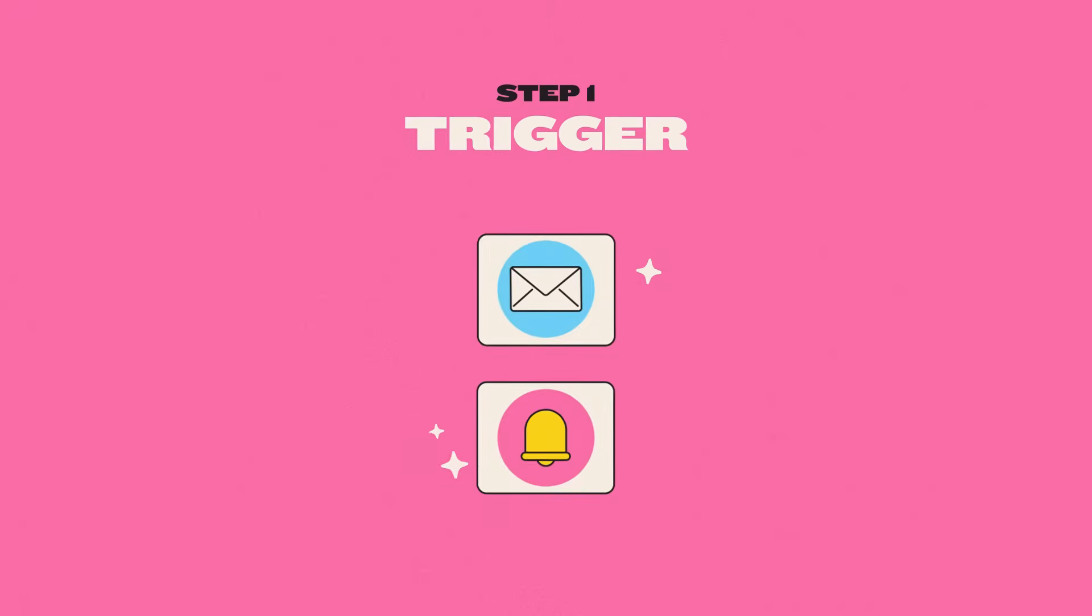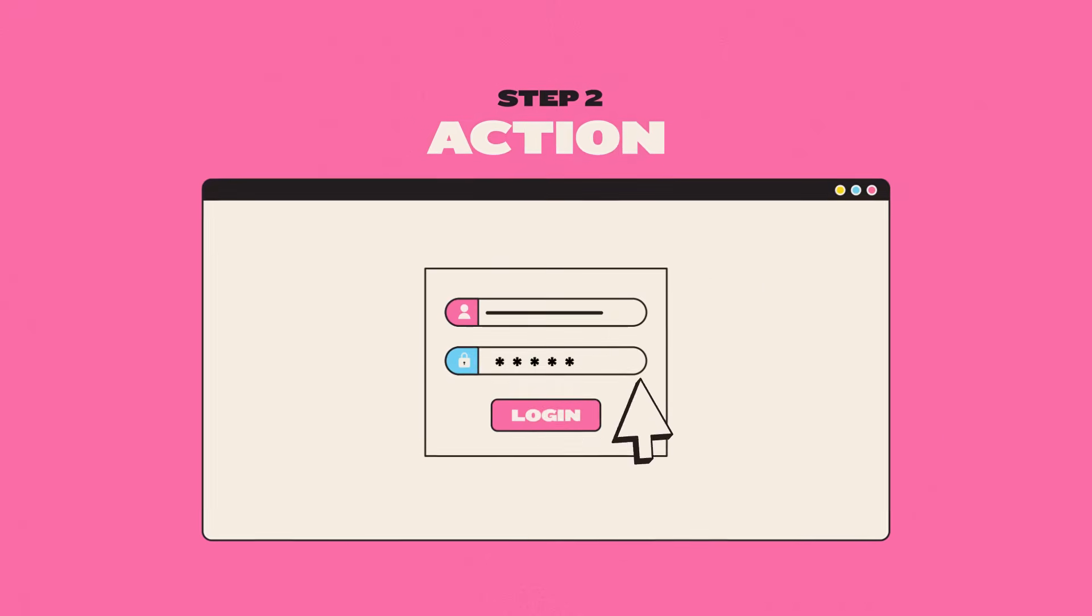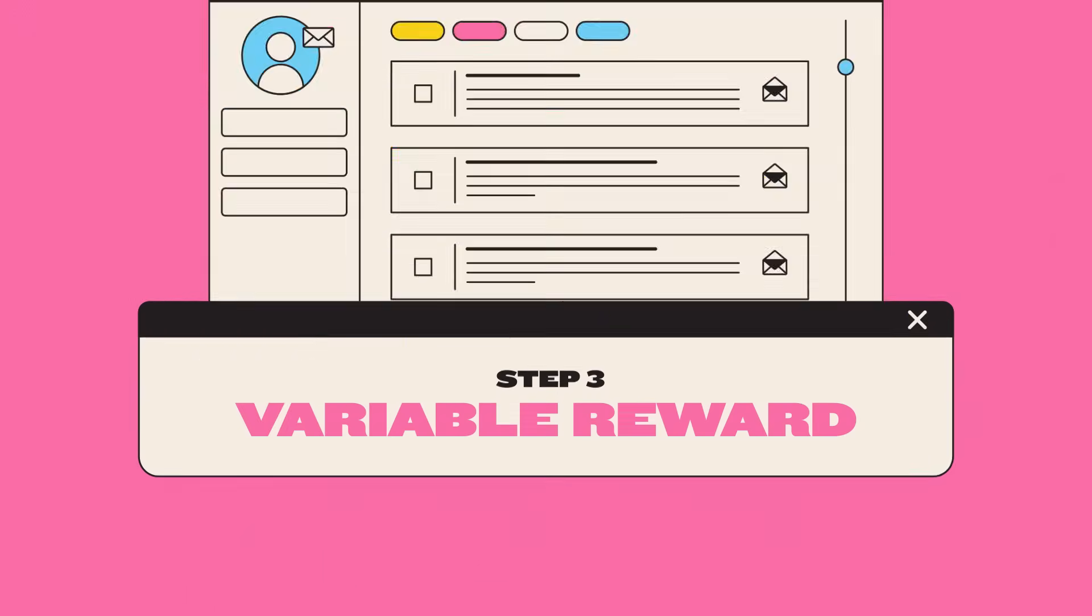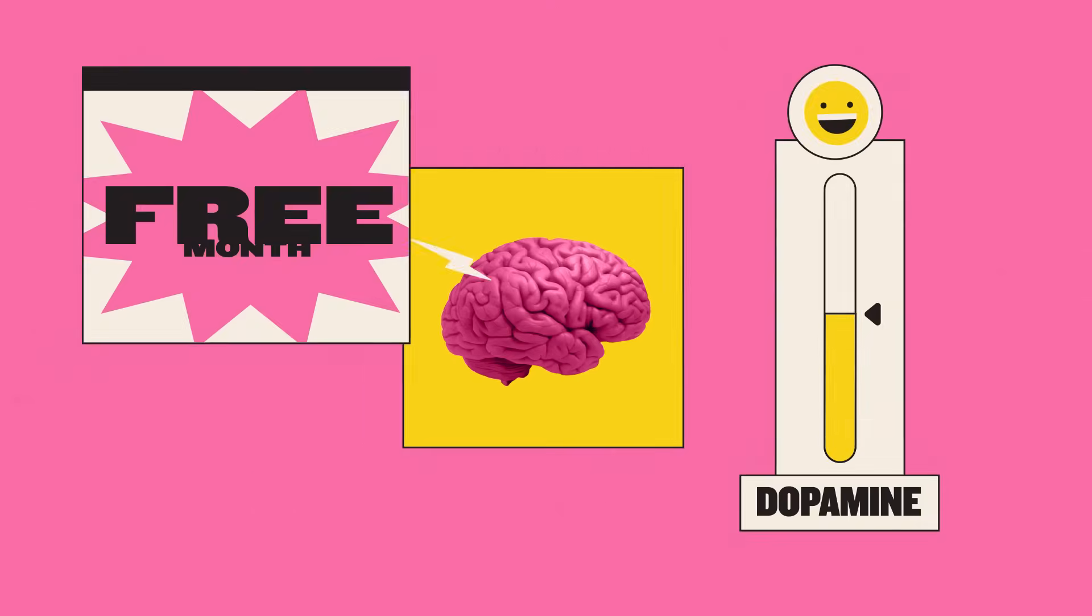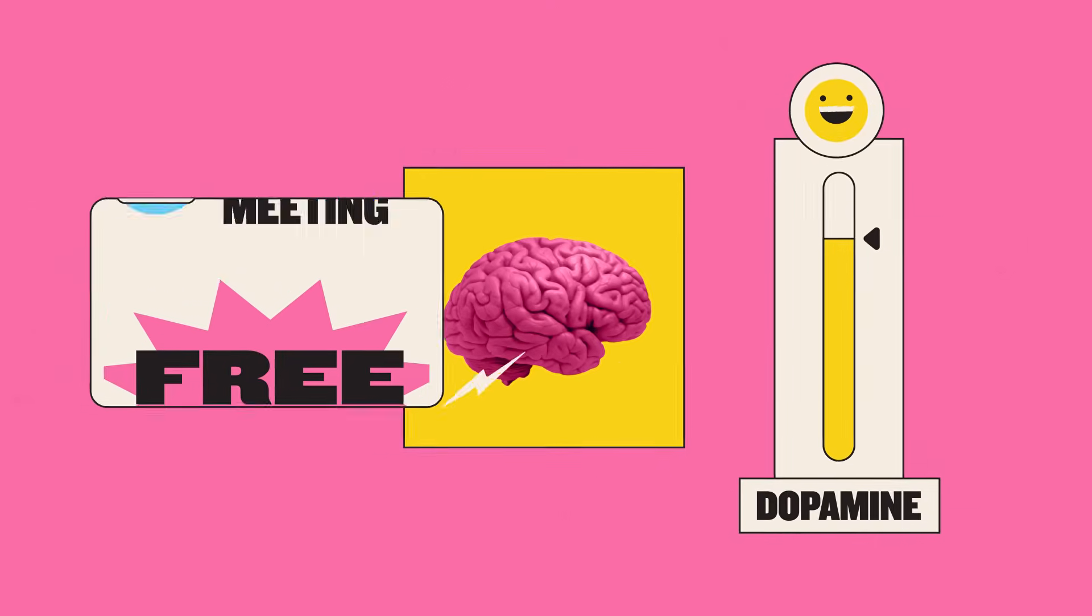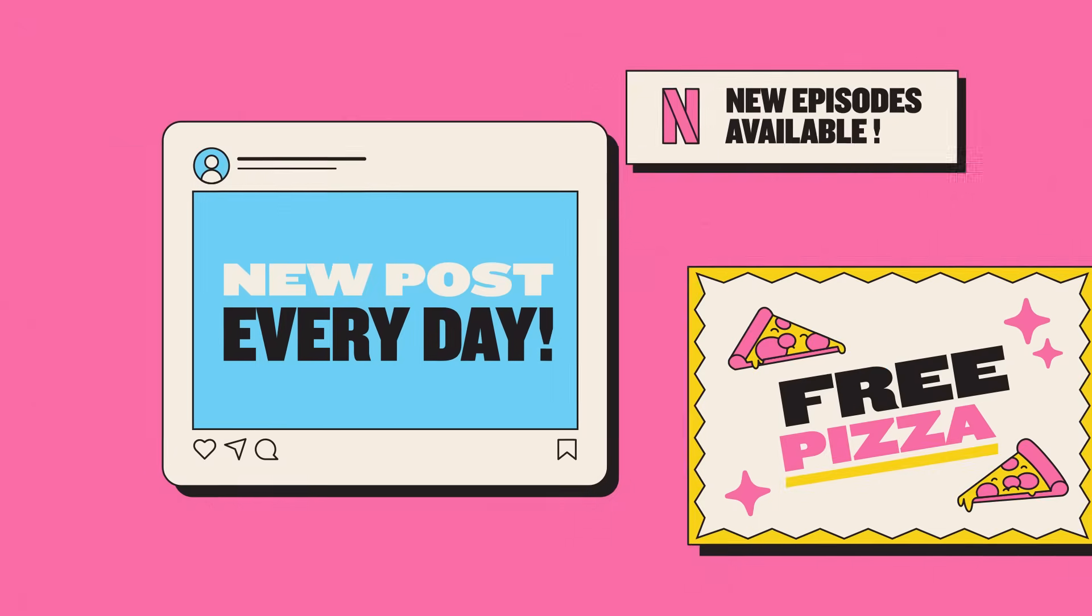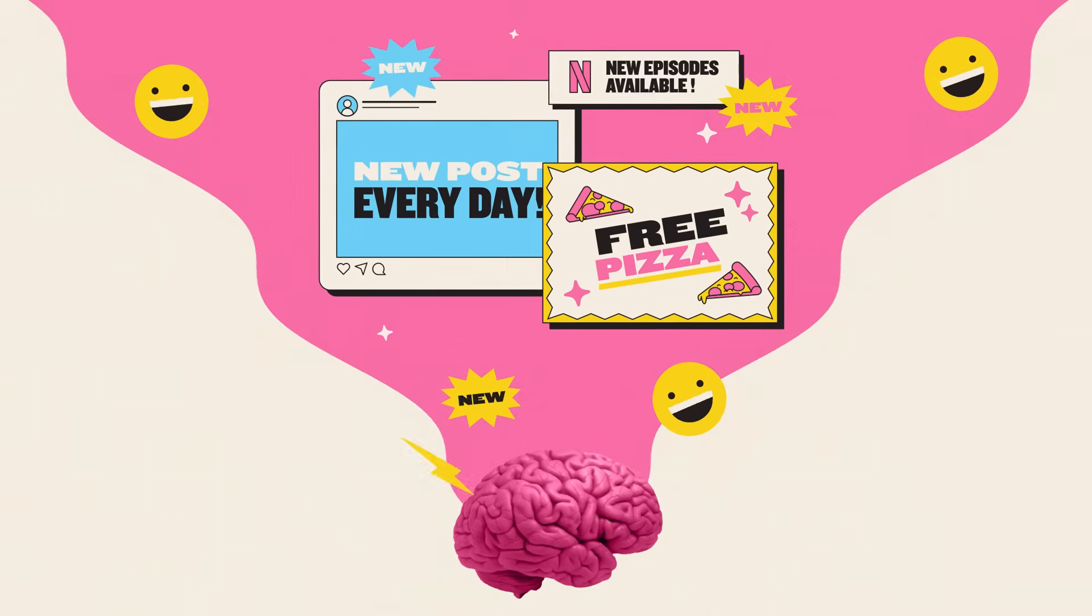First, a trigger, such as an email or notification, gives you a nudge, prompting the action of logging in and using the service, which provides what Eyal calls a variable reward. And this is where the neuroscience kicks in. You see, dopamine surges after unexpected rewards, and gets weaker when things are more predictable. So the promise of new posts, episodes, and other goodies, renews the novelty factor and the neurological response.